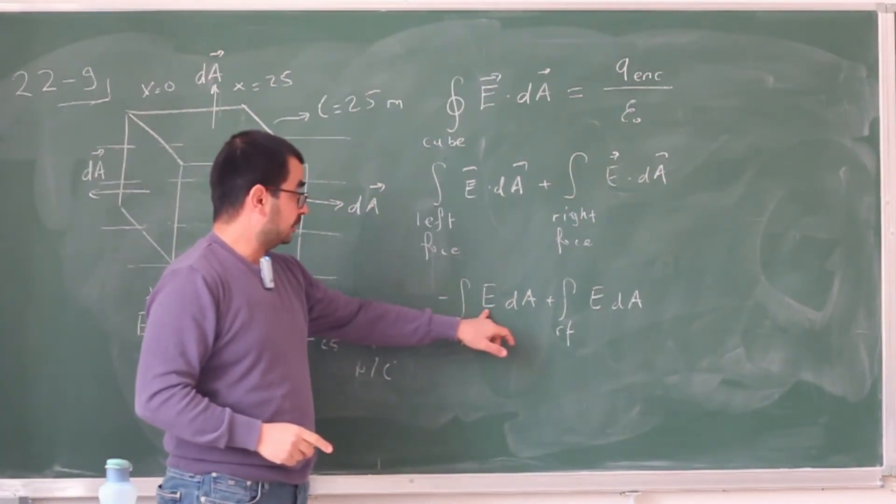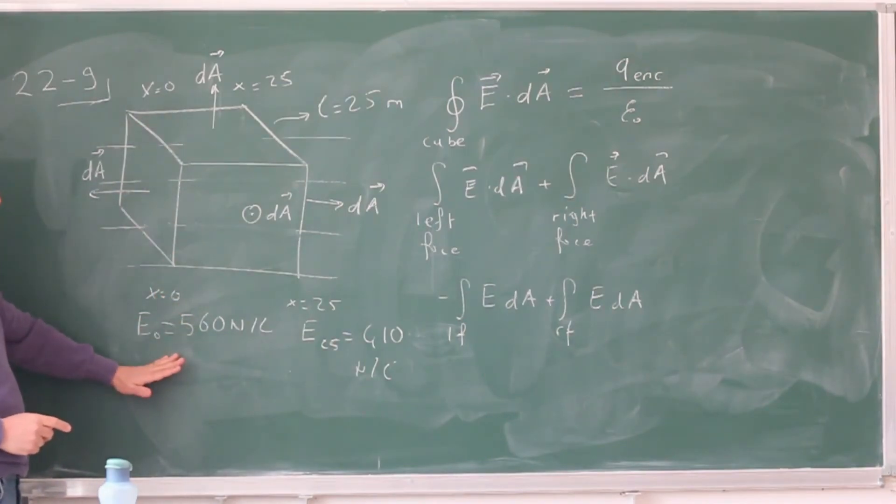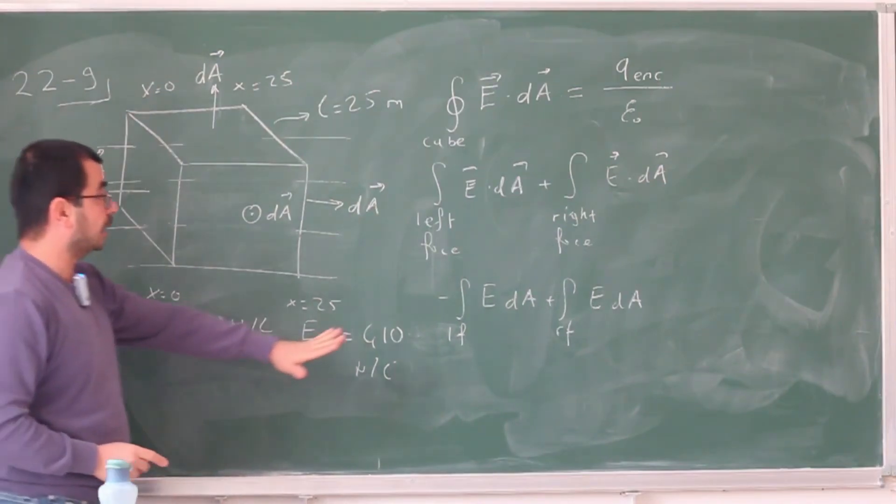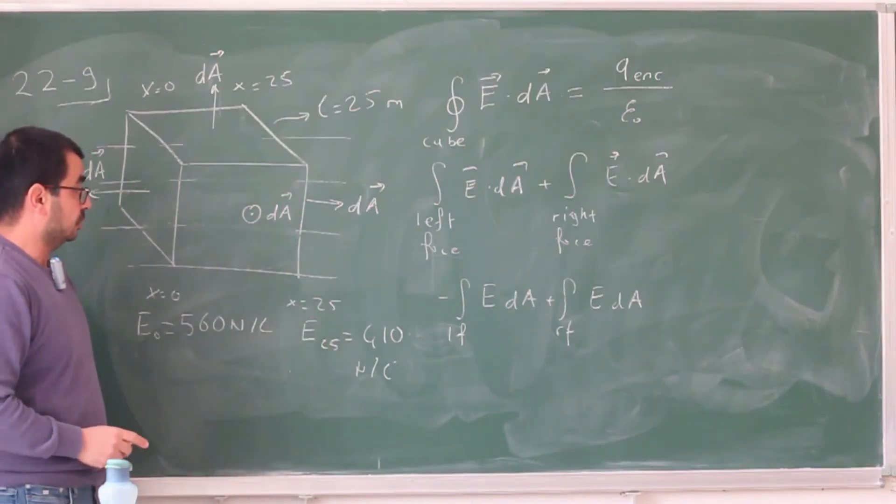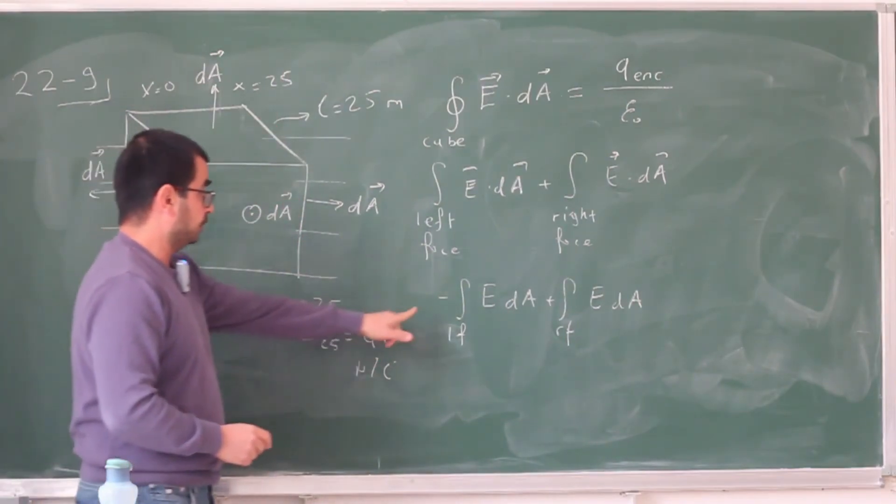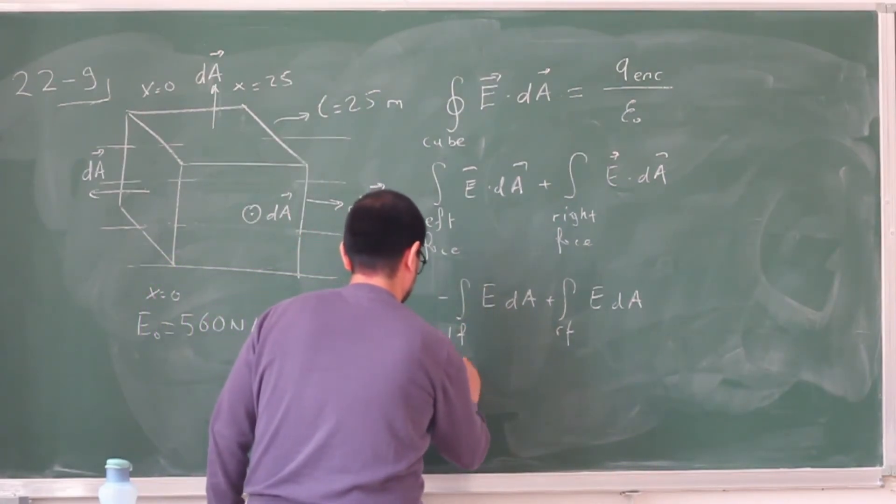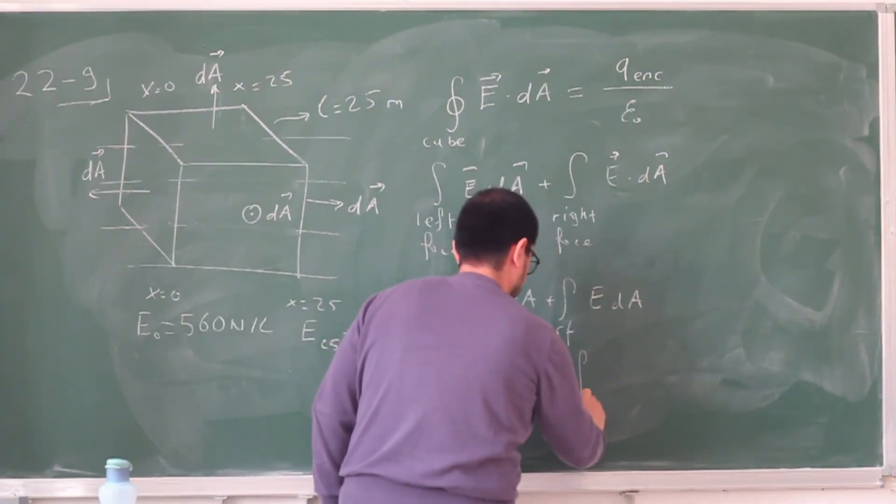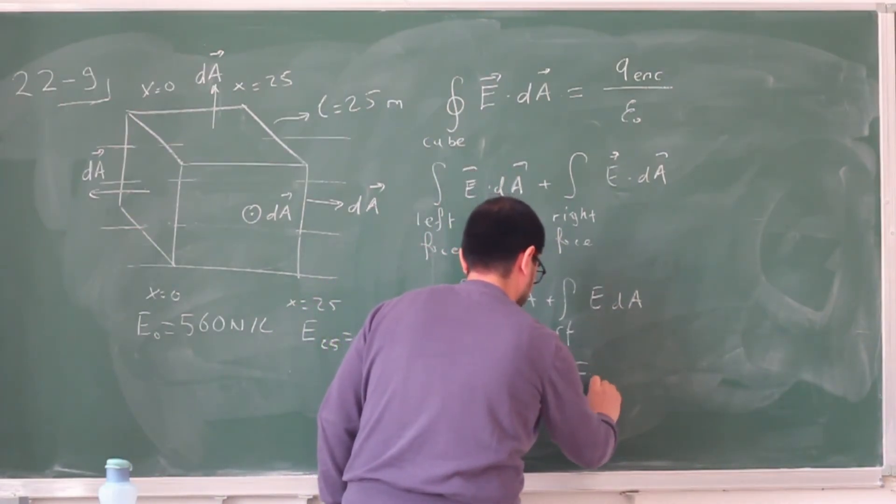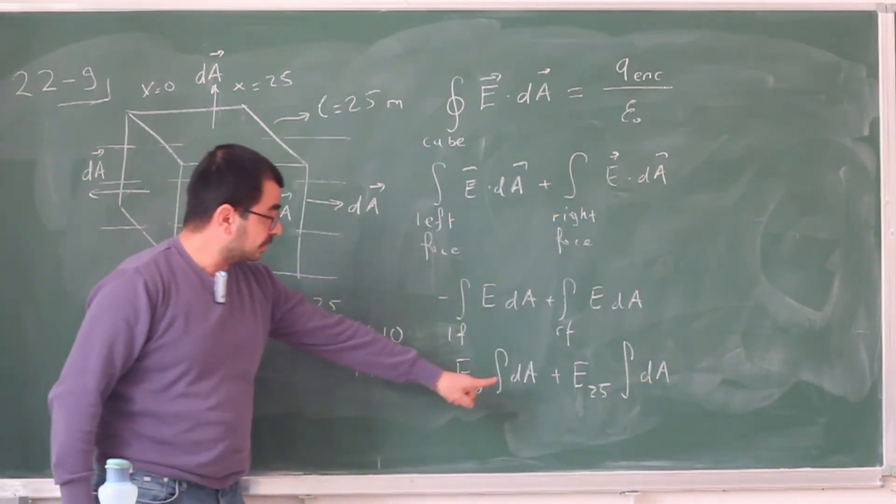On the left face, this electric field has constant magnitude. All of this left face lies at x equals 0. At x equals 0, magnitude E0, 560 N per Coulomb. And likewise, on the right face, the magnitude of the electric field is constant. Everywhere, it's just going to be 410. So this integral then becomes... I can take this out because it's a simple constant. E0 A plus... I can take this one out. I'll call this E25 times dA.